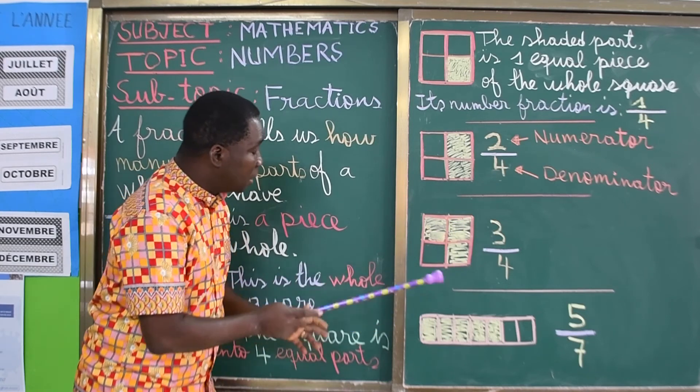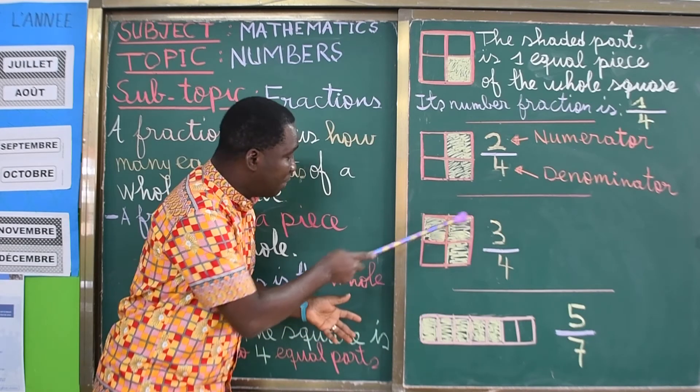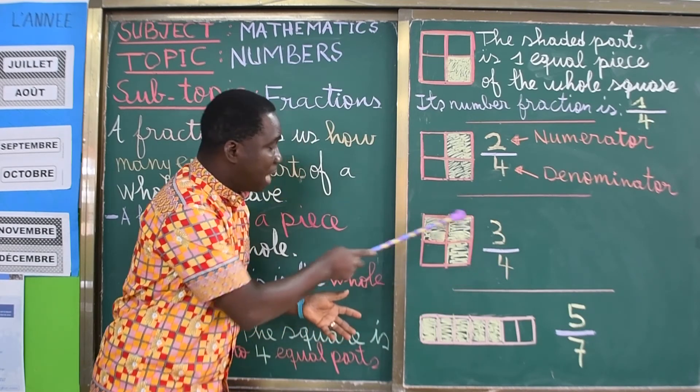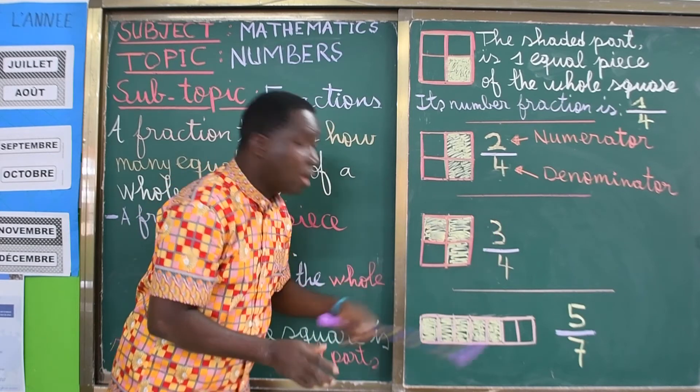Three over four, it means that the whole square is being divided into four. But we have colored or shaded three parts. So we read it three over four.